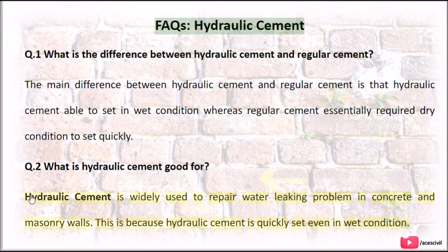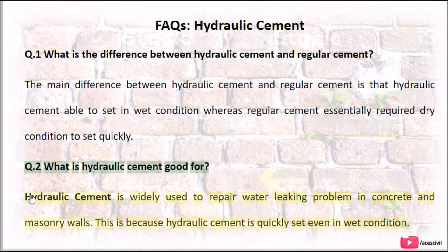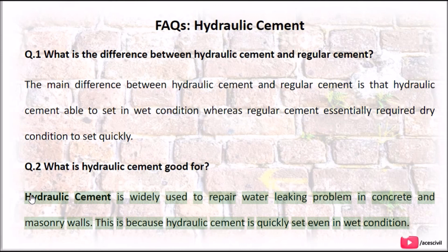FAQs — Hydraulic cement. Q1: What is the difference between hydraulic cement and regular cement? The main difference is that hydraulic cement is able to set in wet conditions, whereas regular cement essentially requires dry conditions to set quickly. Q2: What is hydraulic cement good for? Hydraulic cement is widely used to repair water leaking problems in concrete and masonry walls, because it sets quickly even in wet conditions.